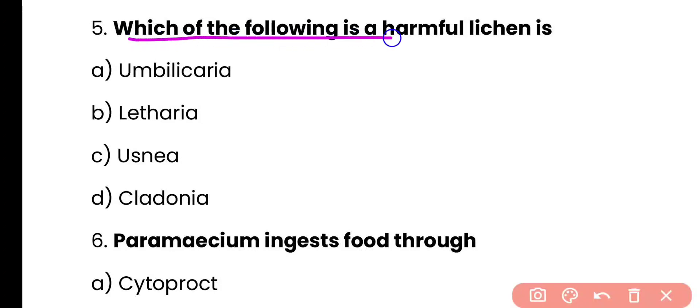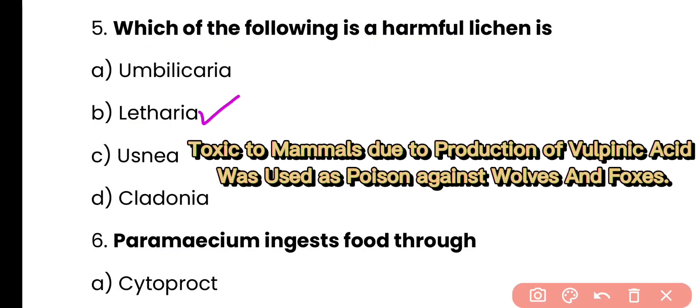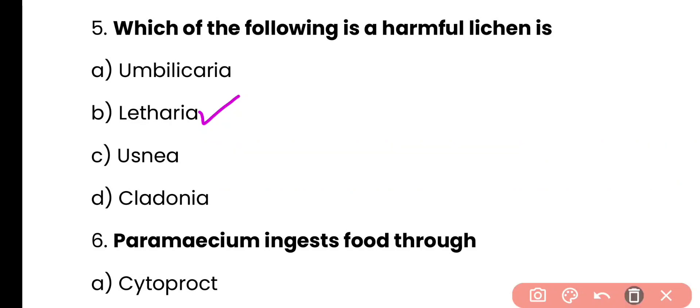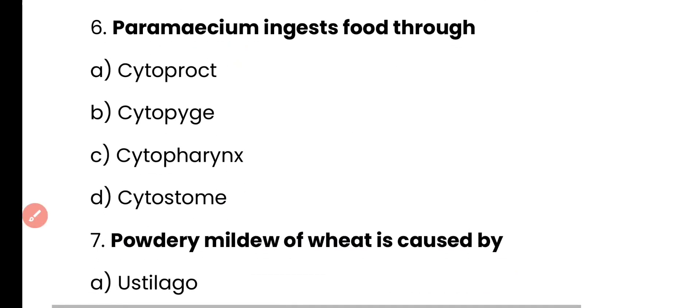Question number 5. Which of the following is a harmful lichen? Umbilicaria, Letharia, Usnea, or Cladonia? Correct answer is option B. Letharia vulpina is a harmful lichen and it is toxic to mammals due to production of a substance called vulpinic acid. It was historically used as a poison against wolves as well as foxes.